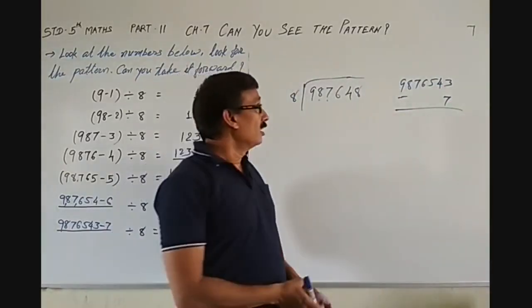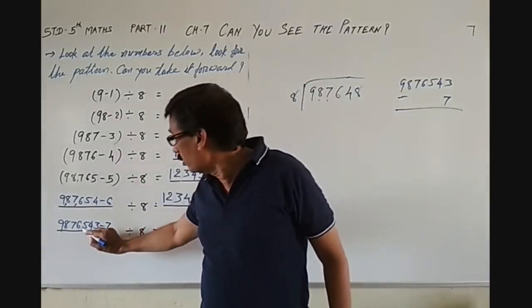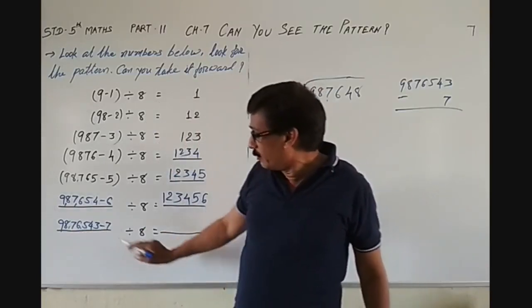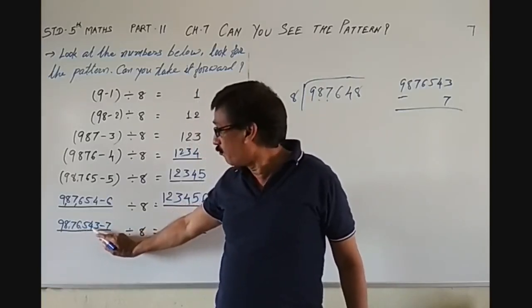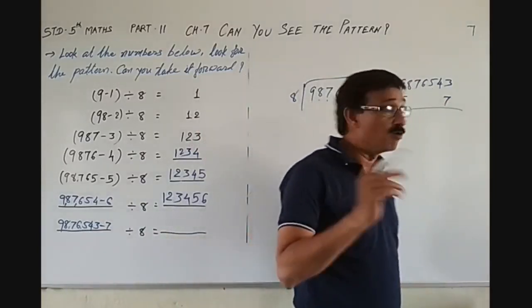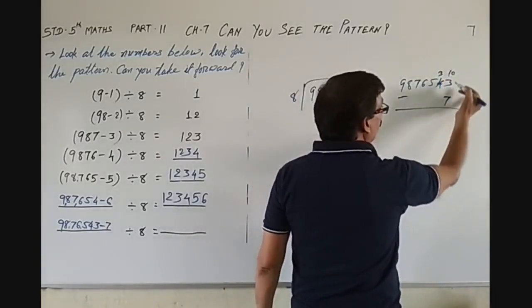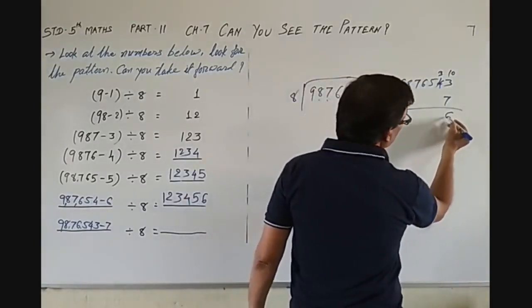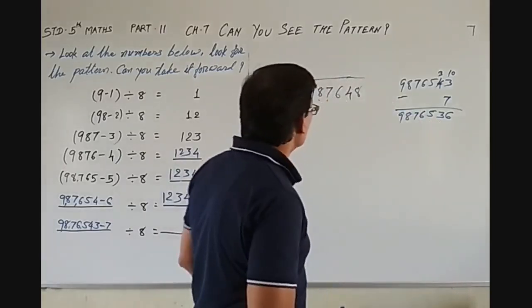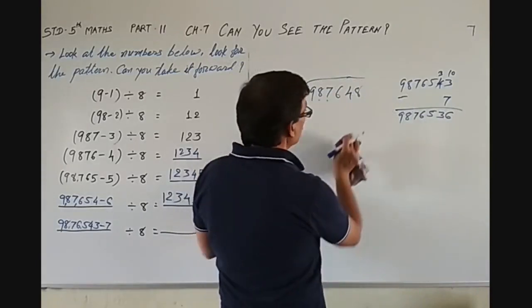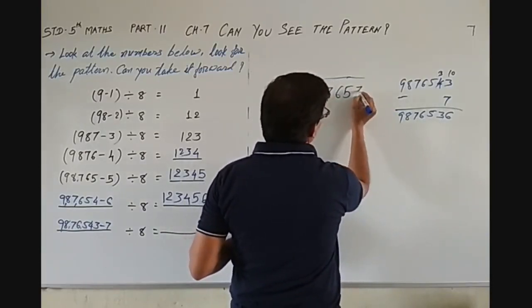So if we subtract 7 from this number — first of all, what is this number? If you cannot read it, then put a decimal point. So you will come to know it is 98,076,543. Let's subtract from that: 7 cannot be subtracted from 3, so take 10. Now 13 minus 7 is 6. So the result is 98,765,436.